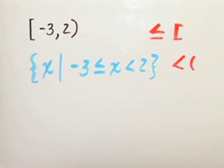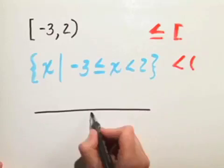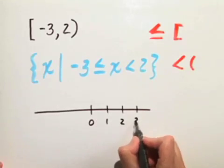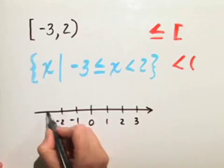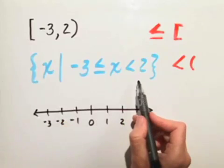Now, how do we graph this on a number line? We look at our set builder notation, and we can get our answer directly from our set builder notation.